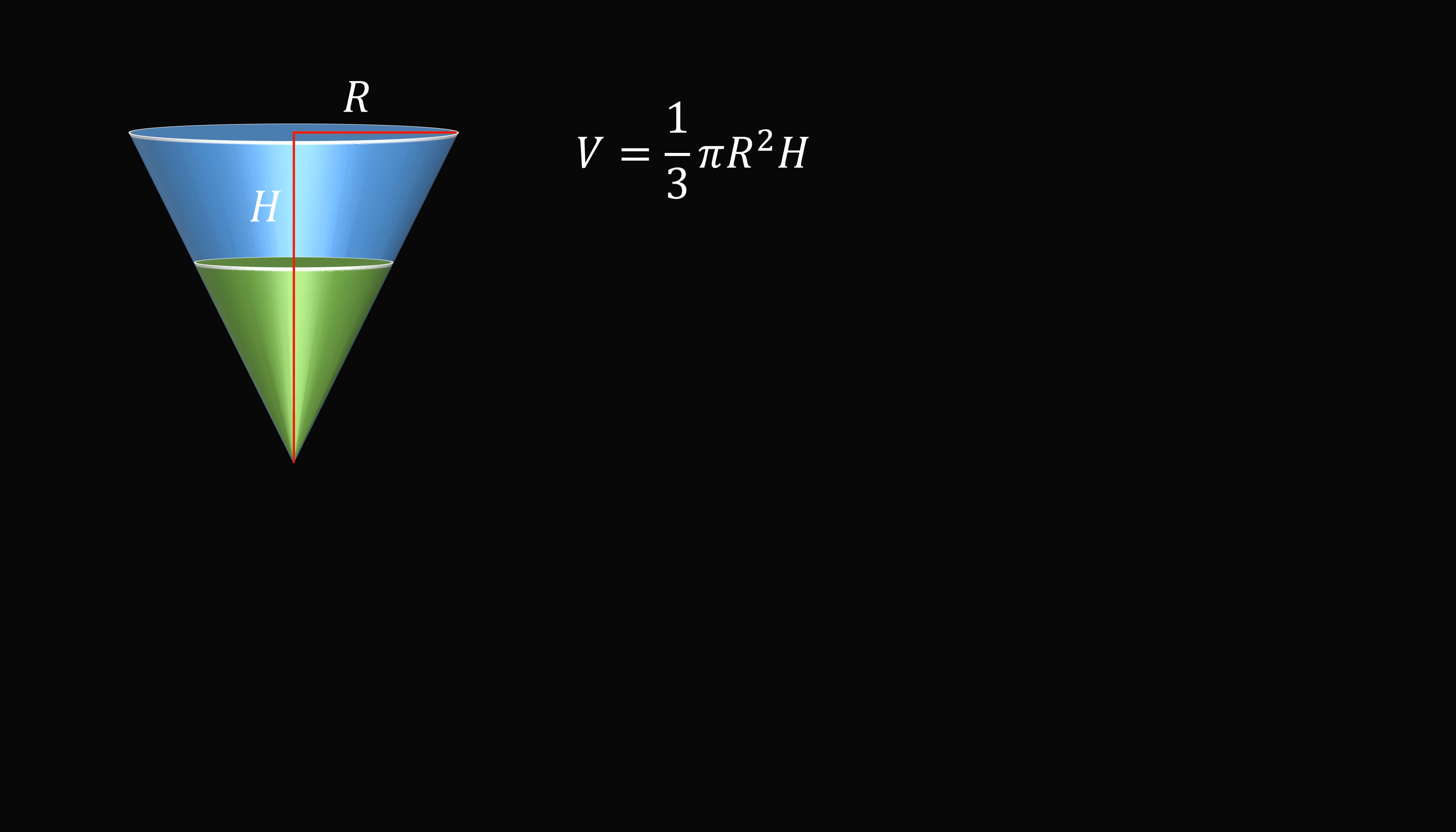Now imagine we have a smaller cone that's inside this larger cone. This smaller cone will also have its dimensions and we can call its radius lowercase r and its height as lowercase h. So the volume of this smaller cone will be lowercase v is equal to 1 third multiplied by pi multiplied by lowercase r squared multiplied by lowercase h. So how do we relate the two volumes of these cones?